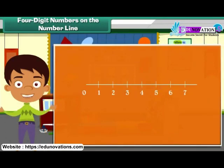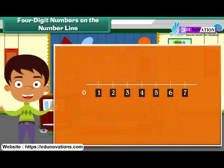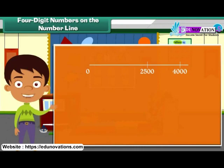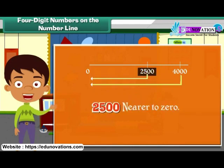A number line is a line used to represent numbers. A number line has equal spaced divisions. The smaller numbers are placed nearer to zero than larger numbers. Compare the positions of 4,000 and 2,500 on the number line. Which number will be nearer zero? Which of the two is bigger? 2,500 will be nearer zero. 4,000 is bigger.